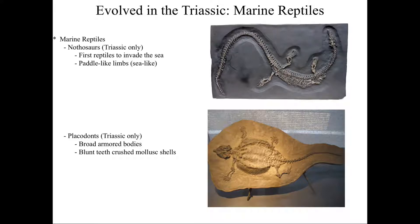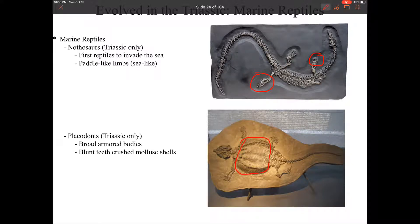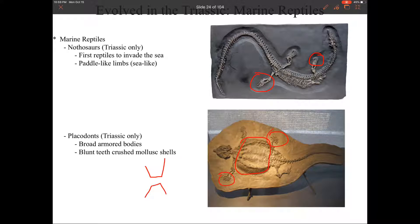Some of our marine reptiles that evolve: the first group are the nothosaurs, which are the first to go back into the sea. You can see that their limbs definitely have five fingers and five toes, but they are fairly paddle-shaped — you can definitely see how these came from land-dwelling organisms. Then we have our placodonts, which are basically big, fat, roaming tanks in the water — not very streamlined at all. They had blunt teeth, which means they were crushing shells between them, so these are definitely shell crushers.